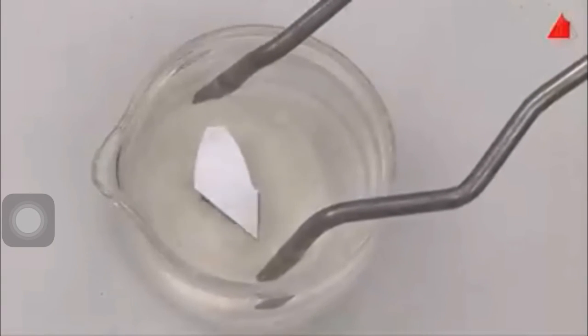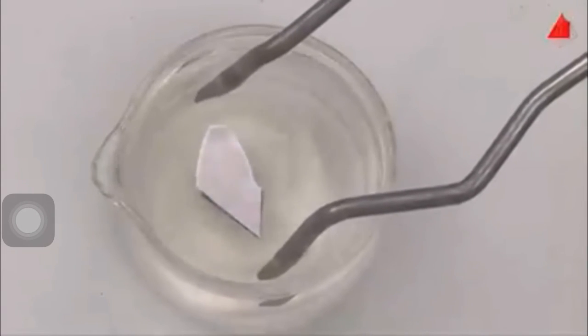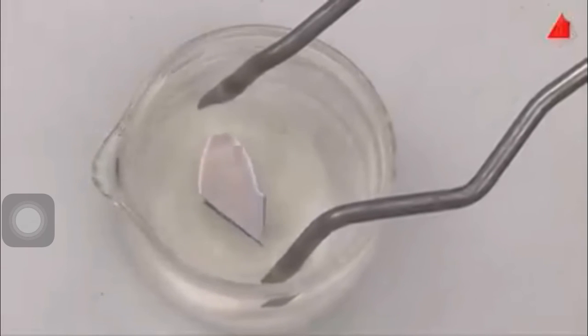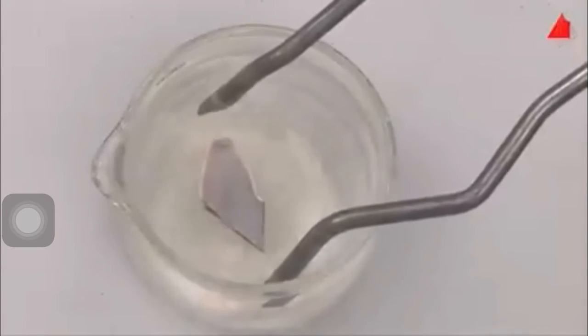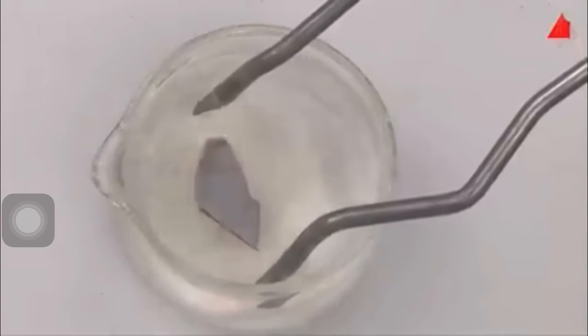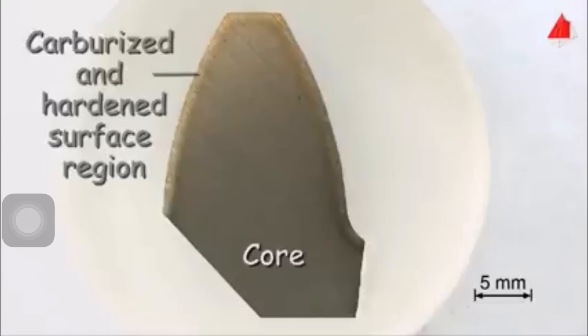This is a tooth from a case hardened gear wheel. The surface region of the gear wheel has first been carburized at high temperature and then quenched. The etched sample shows the smooth transition from the carburized and hardened surface region to the softer interior.